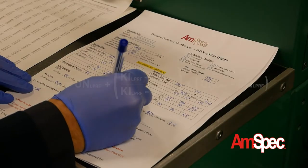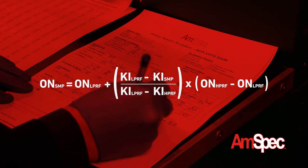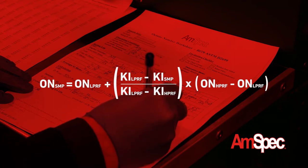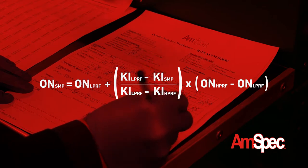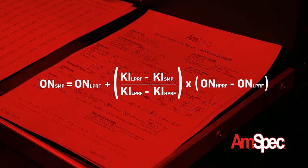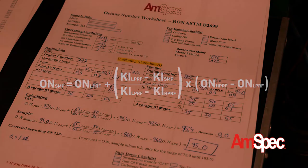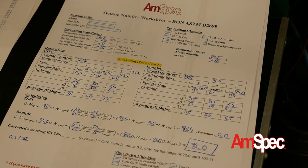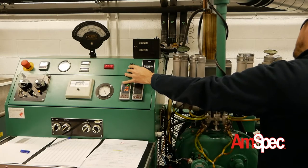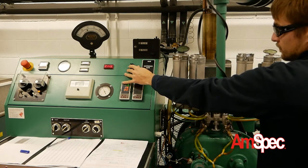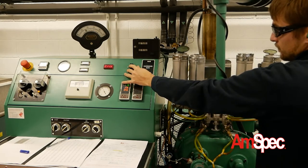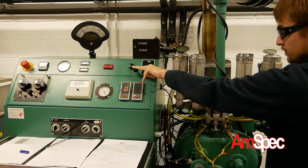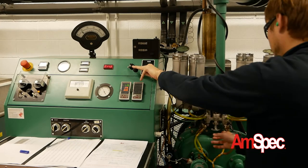After measuring the sample and both HPRF and LPRF standards, we obtain our result using the prescribed calculation. Once the test is finished, the compression ratio is reduced to 520. The selector valve is set to the medium position and all the bowls are emptied. The air heater and the ignition are then turned off, and finally the engine ignition is switched off.